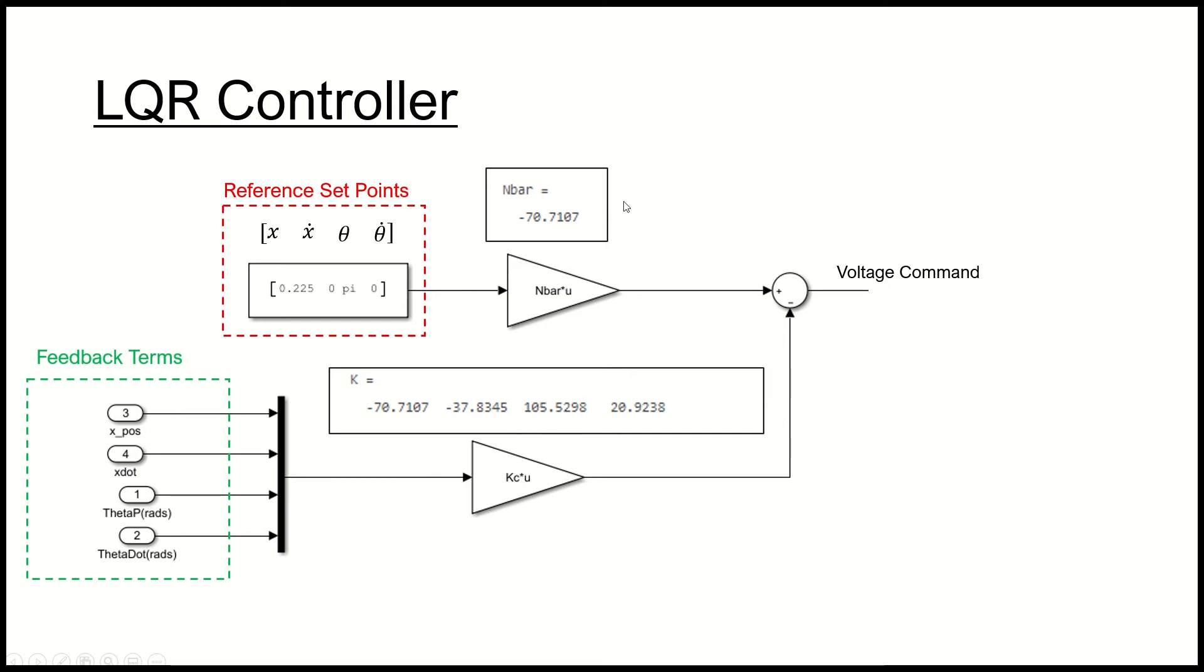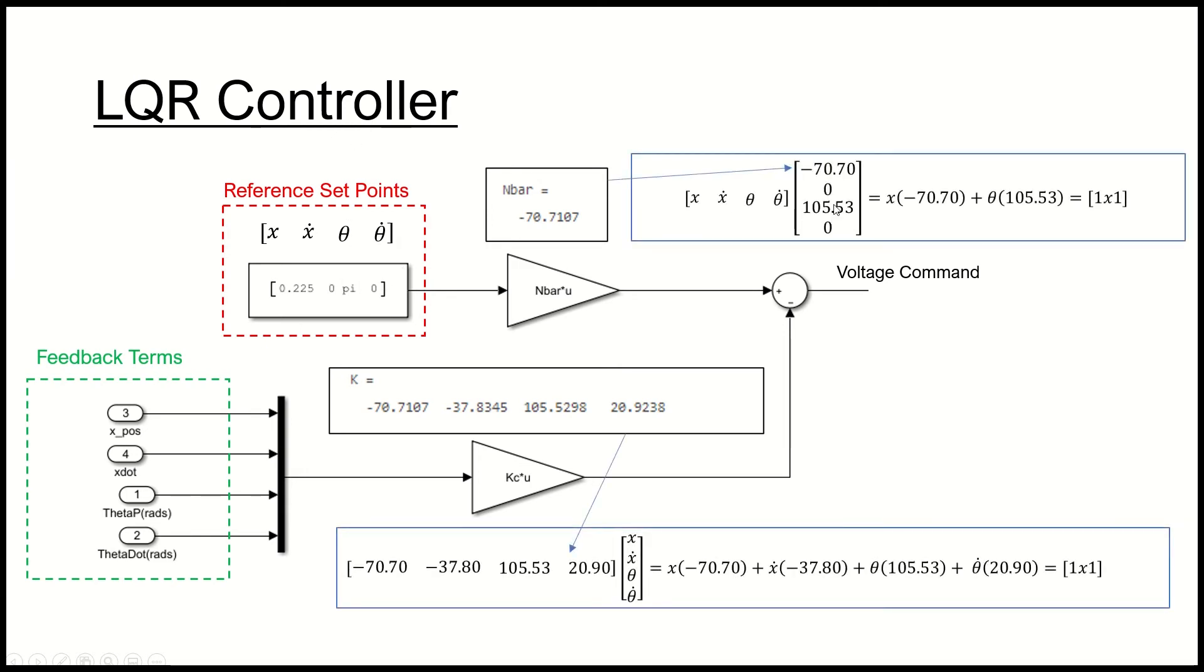It's effectively just multiplying x position by this value, x dot by this value and adding them, theta by this value and adding it, and so on. The same thing happens with the reference set point. The only thing different really is that I had a pi here instead of a zero from compared to mathworks, because when my pendulum is upright that angle is pi rather than zero.